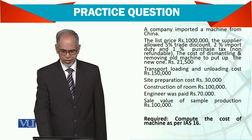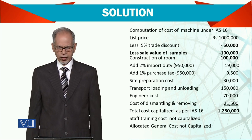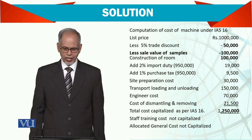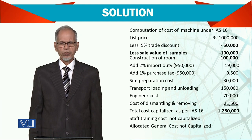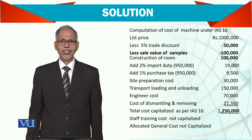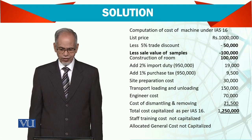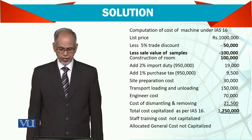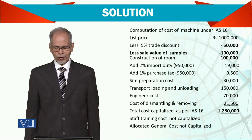Now let us compute the figures — the computational cost of machine under IAS 16. List price is 1 million. Less 5% discount. Less the sales value of samples. Then add construction cost of room, 2% import duty — import duty is paid not on 1 million but on the invoice value after the trade discount. Similarly, add 1% purchase tax, site preparation, transport, loading and unloading, engineer cost, and cost of dismantling and removing. The total comes to 1.250 million.